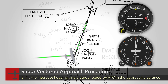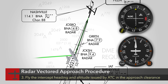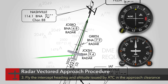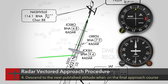ATC will issue an approach clearance that includes a heading and altitude to maintain to intercept the final approach course. Once established on the final approach course, descend if necessary to the minimum altitude published for that approach segment.